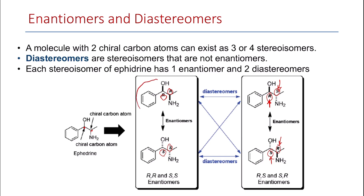So if we look at the R,R stereoisomer, the one with R,S — where only one configuration has changed — is a diastereomer of it. Also, the S,R stereoisomer is a diastereomer to the R,R, because only one configuration has changed. You can apply this rule to all of the different stereoisomers.